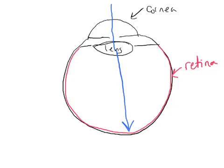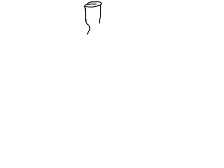Phototransduction is what happens in the retina to pass that signal along the optic nerve to the brain. There are three cells involved in passing the light signal back to the optic nerve and onto the brain. The first cell that actually detects light is the photoreceptor cell — so these are your rods and your cones.